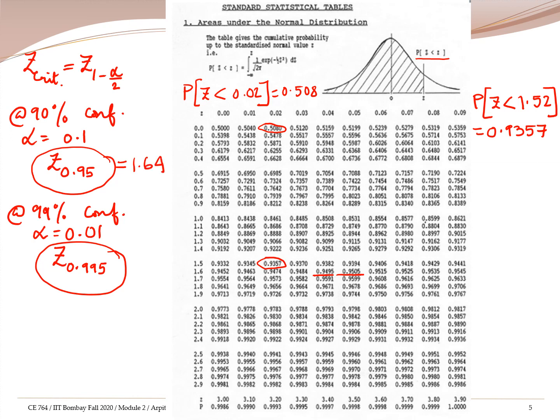Similarly, for alpha equal to 0.01, we need to find Z_0.995. Looking up the table, the value 0.9949 is found, which for practical purposes equals 0.995. This corresponds to 2.5 for the first decimal place and 0.07 for the second decimal place. So Z_0.995 equals 2.57.